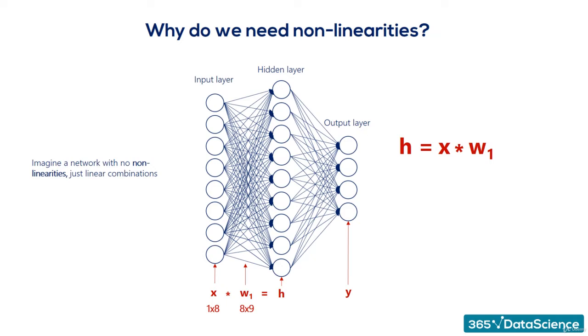So, our hidden units are summarized in the matrix H with a shape of 1 by 9. Now, let's get to the output layer from the hidden layer. Once again, according to the linear model,